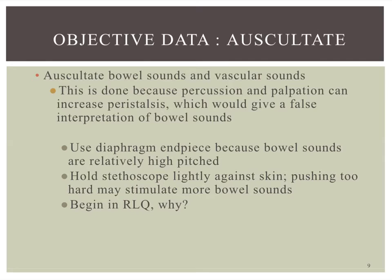After inspecting, we move to auscultation — grab your stethoscopes. We're listening for bowel sounds and vascular sounds, and we do this before we percuss and palpate, because percussion and palpation can increase peristalsis and give us a false interpretation of bowel sounds. We use the diaphragm of the stethoscope because bowel sounds are high-pitched, and just lightly hold it against the skin. We always start in the right lower quadrant because that's where the ileocecal valve is, and bowel sounds are typically always heard there.